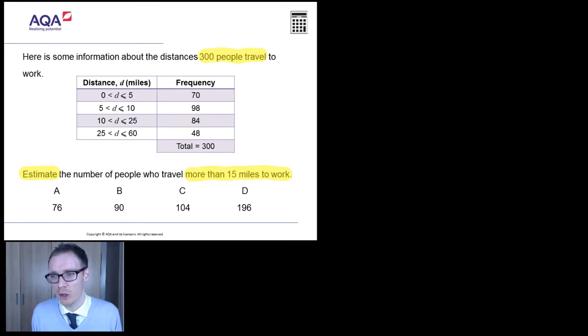Right, let's break this down logically and think what we know. Do we know any people who definitely travel more than 15 miles to work? Well, what about all these guys here in the 25 to 60? They travel between 25 and 60 miles. So 48, they're definitely in there. 48 people definitely travel more than 15 miles to work. Okay, anyone we can rule out? 0 to 5, gone. 5 to 10 miles, none of them are traveling more than 15 miles. They're gone.